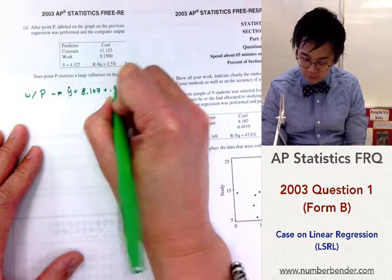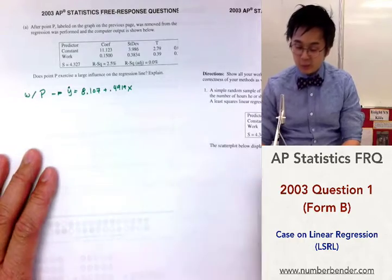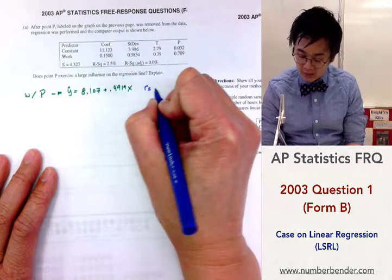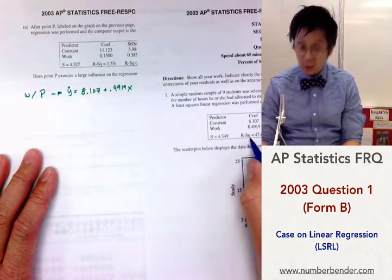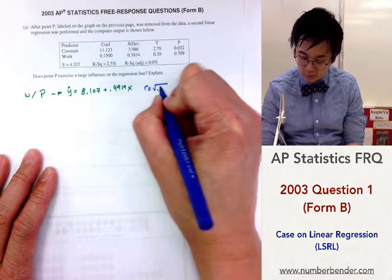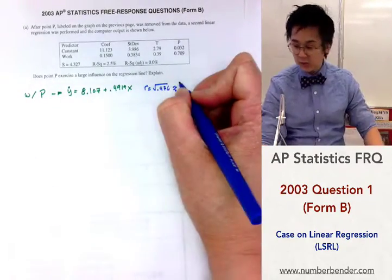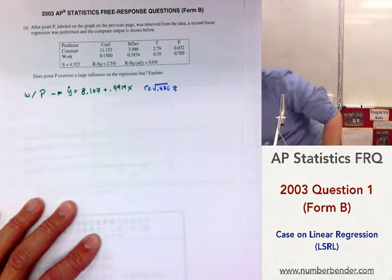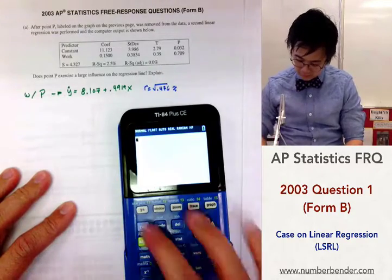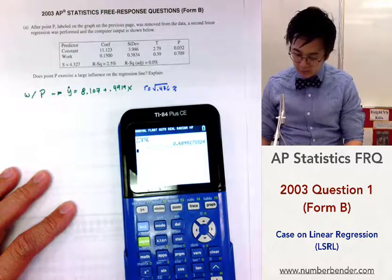And also we can write out our correlation coefficient, which is the square root of r squared over here, which is given by 47.6%. So we can write it out as .476, and using our calculator, square root of .476 is going to give us .689, or about 70%.